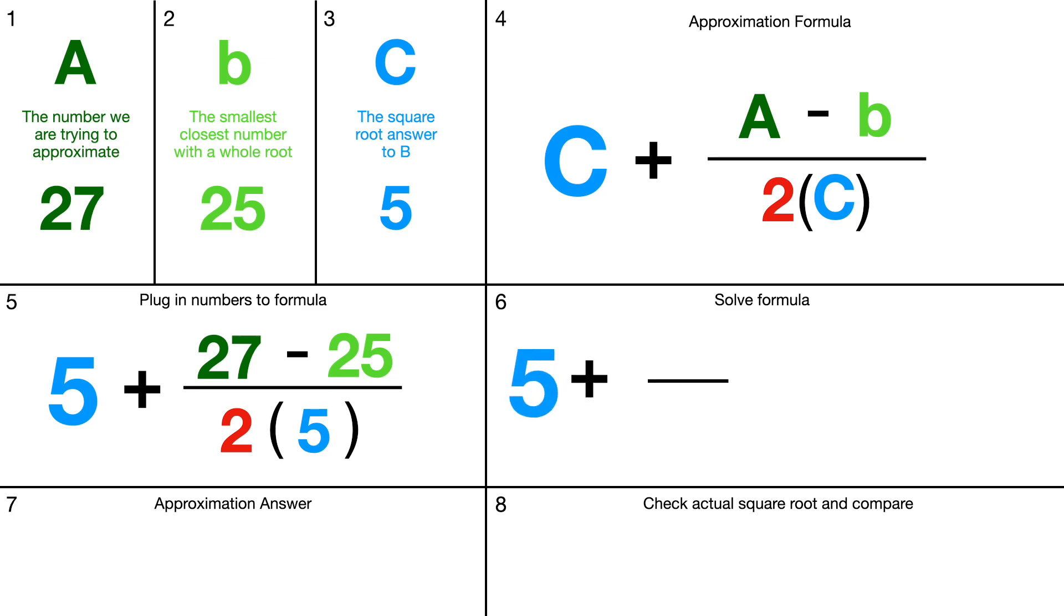So you've got 5 plus, 27 minus 25 is 2, and 2 times 5 is 10. That's not fully simplified. We're going to have 5 plus 2 tenths, which simplifies to one fifth. If you do the long division on that, that gives you 5.2.